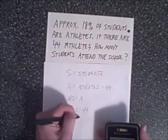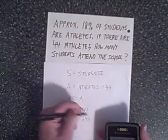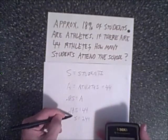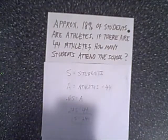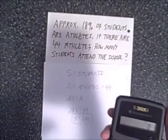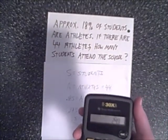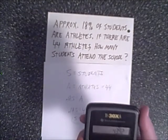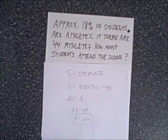So let's round it down. The number of students at the school is approximately 244. To check this, we take 244 times 0.18, which is 18%, and we get 43.9, which is 44 athletes.